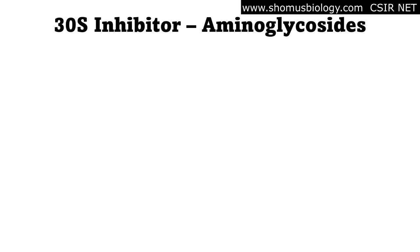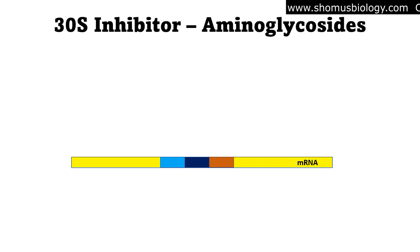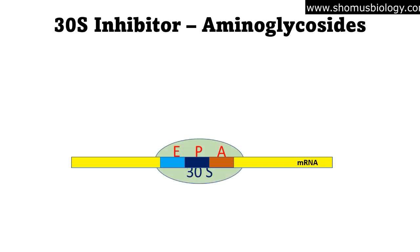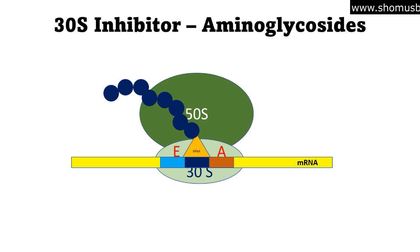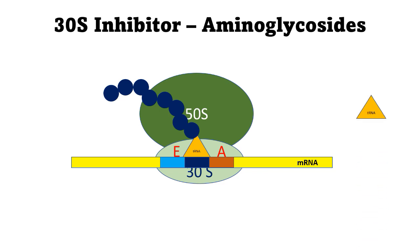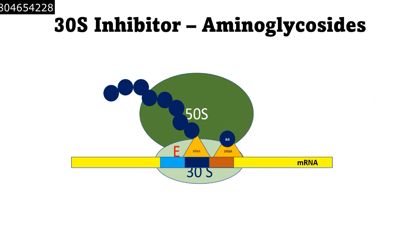In this animated segment we see aminoglycosides as a 30s ribosomal subunit inhibitor. For protein synthesis in prokaryotes, we need an mRNA with codons represented in light blue, dark blue, and orange. We also have 30s and 50s ribosomal subunits, each with E-site, P-site, and A-site. There is a growing polypeptide chain and a t-RNA sitting in the P-site with the polypeptide chain at the growing phase.